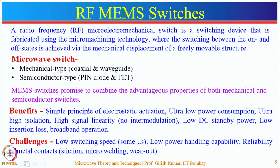RF-MEMS switches offer the advantages of both switch types. They operate simply through electrostatic actuation with ultra low power consumption. The isolation is very high, and they provide high signal linearity and low DC standby power. The insertion loss is less compared to semiconductor types and they are more suitable for broadband operations. However, they have challenges: low switching speed, low power handling capability compared to semiconductor switches, and limited reliability of metal contacts.